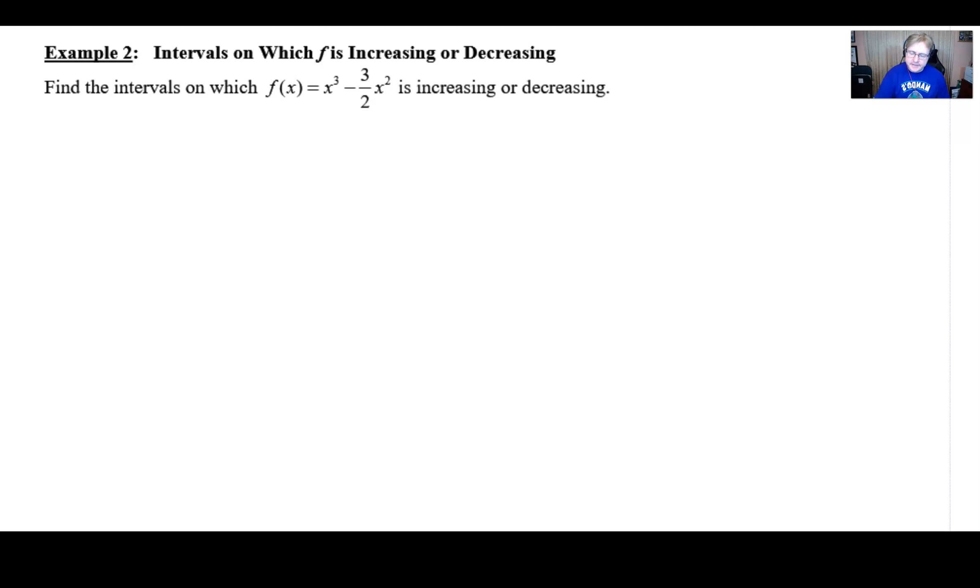As you can see, we are given a function f(x) = x³ - (3/2)x², and we're asked to find the intervals over which this function is either increasing or decreasing. So unlike the previous problem, we don't have a graph to go by, so we're going to have to figure out all of this information analytically, algebraically so to speak.